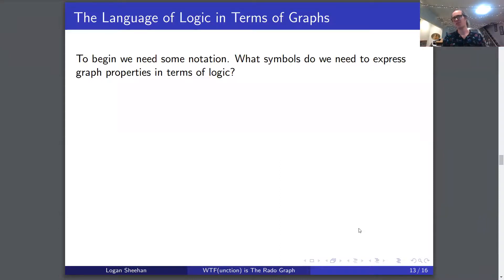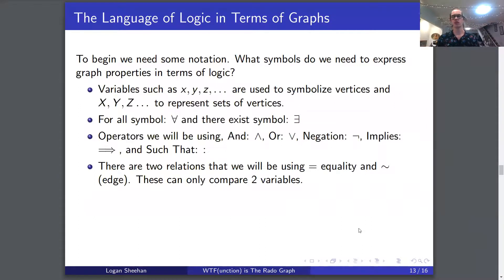What symbols do we need to express graph properties in terms of logic? Variables: lowercase letters to symbolize vertices, uppercase letters to represent sets of vertices. We have our for all symbol, the upside down A. We have our there exists symbol, the backwards E. Then we have operators like the wedge, which is AND. We have our V, which is OR. We have our negation. We have our implies, which is a one-way arrow. And we have such that, which is a colon. There are two relations we'll be using: equality and the little equivalent symbol, which will represent an edge. These can only compare two variables, so we cannot say x and y are related to z - we have to say x is related to z, and y is related to z.